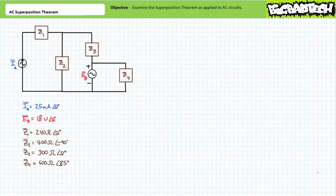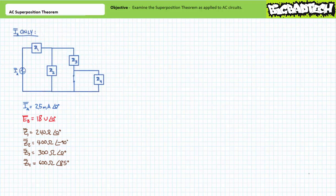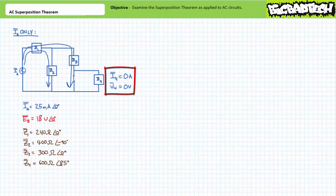Let's start this analysis from the perspective of sinusoidal current source IA. We need to remove voltage source EB by replacing it with a short. Note when we redraw the as-analyzed circuit including the short, the nature of this circuit has fundamentally changed. Any current traveling out of impedance element Z3 will travel through the zero-impedance short rather than the path afforded by Z4. The inclusion of the short has effectively removed Z4 from consideration — no current will travel through Z4 and there will be no voltage drop across it. I4 equals zero and V4 equals zero.